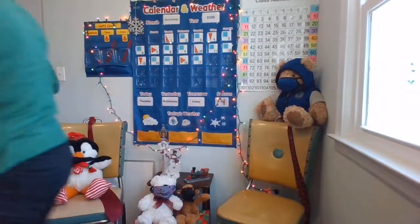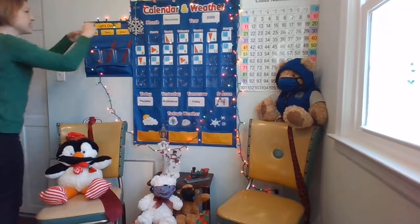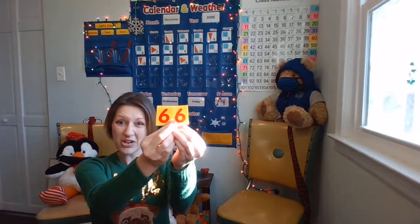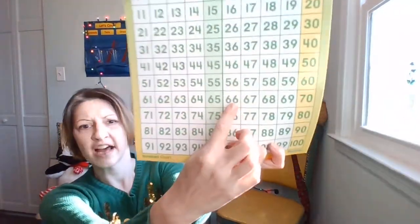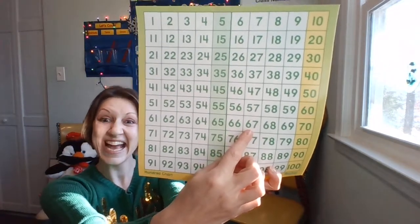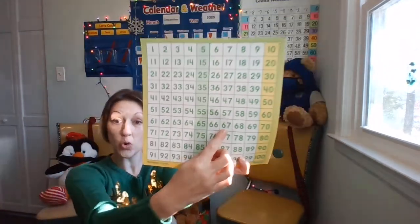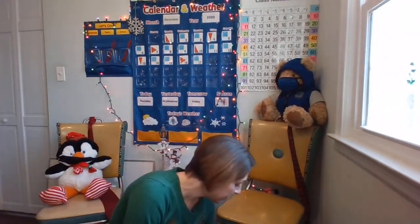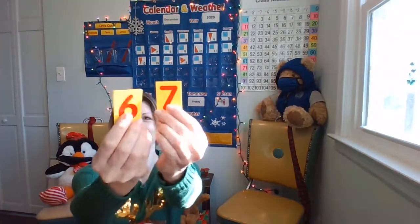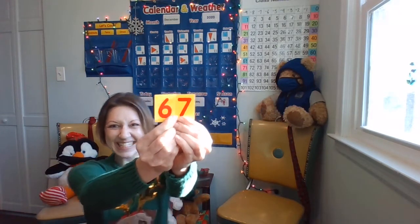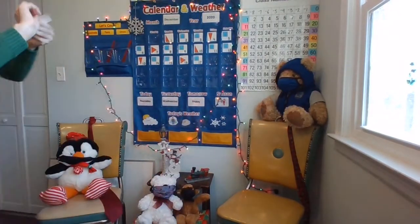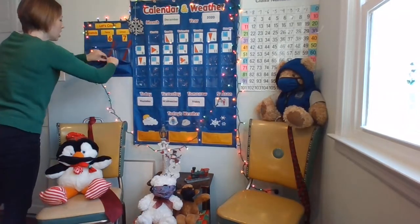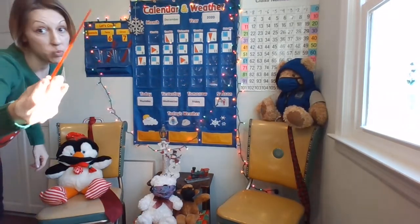How many days have we now been in school? I have the number 66 from yesterday. Do you know what number comes after 66? Let's go ahead and see. Here's 66. What's after? 67. So we need to make 67 — a six and a seven. Let's add this to the place value chart. I'm going to add one counting rod to my ones pocket.